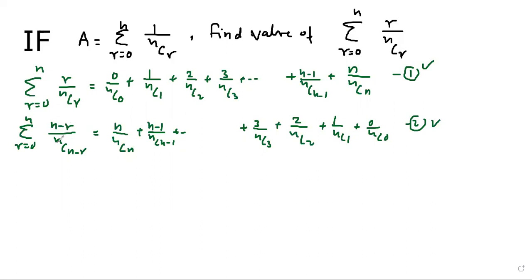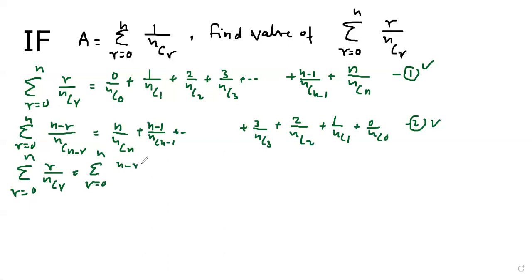Equation number 1 and equation number 2 are both the same series. So we can draw the conclusion that sigma r equals to 0 to n, r upon nCr, is equivalent to sigma r equals to 0 to n, (n minus r) upon nC(n minus r).